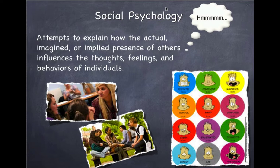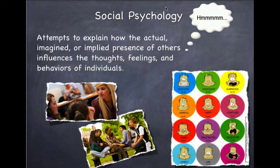Social psychology is defined in three main areas of interest. If you look at the definition, it attempts to explain the actual, imagined, or implied presence of others that influence the thoughts, feelings, and behaviors of individuals. So it's not even just the actual presence, but the implied or imagined. If I think they're there or you're being told they're there, that can influence my thoughts, my feelings, and my behaviors. And social psychology studies that.